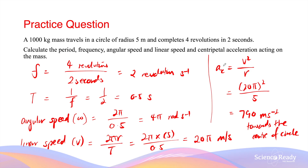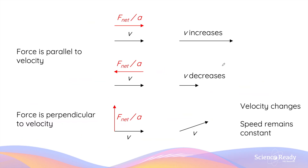Now that we've covered centripetal acceleration, it's important to think back to Newton's laws from the dynamics module. Specifically, Newton's second law tells us that for an object with mass to have acceleration, there must be a net force exerted upon it. When the force is parallel to the velocity — either in the same direction or opposite — it changes the object's speed. If the net force is in the same direction as velocity, the object accelerates and the velocity vector becomes longer.